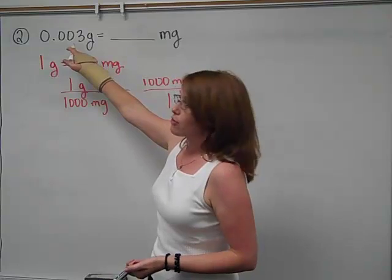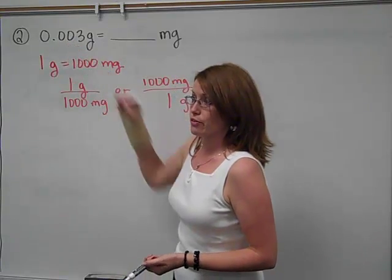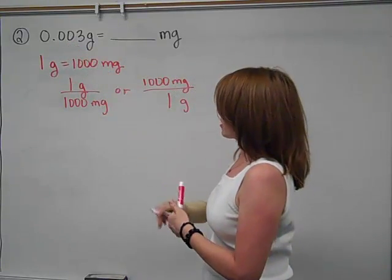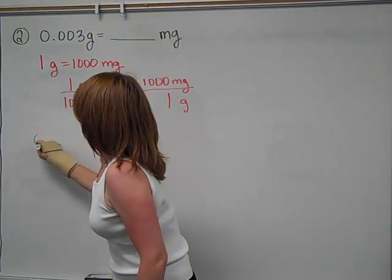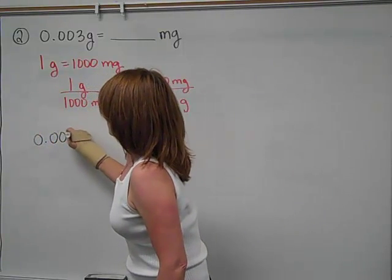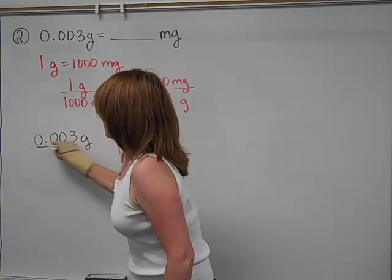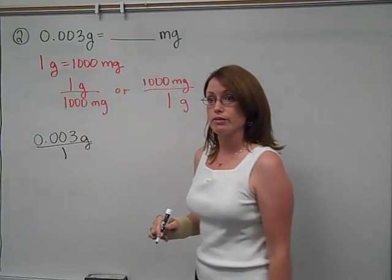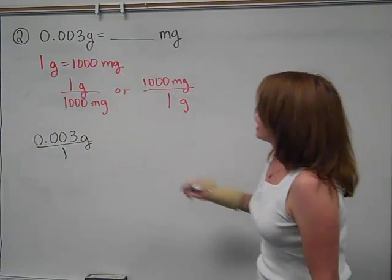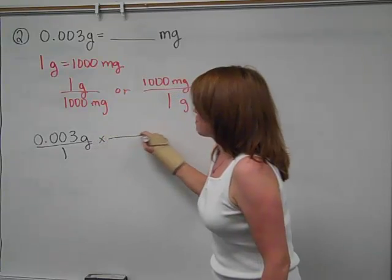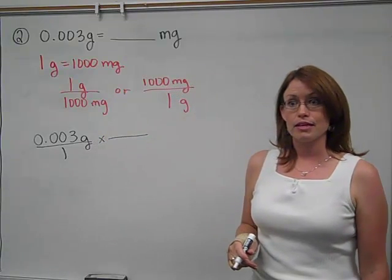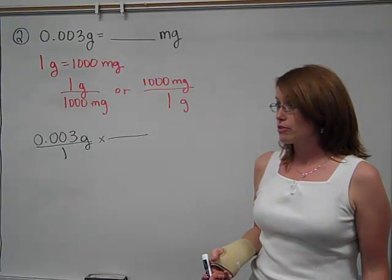Because this is the conversion I'm going to use, I can either write it as one gram over a thousand milligrams or I can put the thousand milligrams on top over one gram. So I'm going to have a choice. But any conversion you pick means it's going to be made into a unit fraction. I happen to be converting three thousandths of a gram. So when I go to set up my problem, since I already know which number I'm converting, I'm going to take that and put it over one.